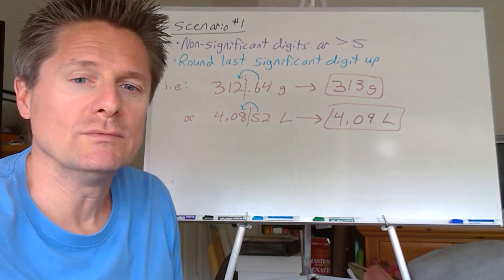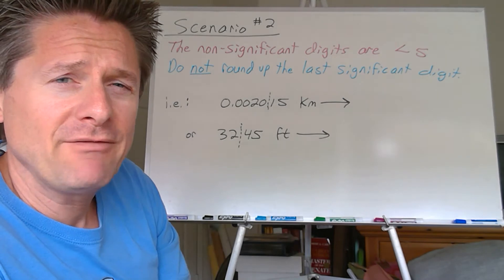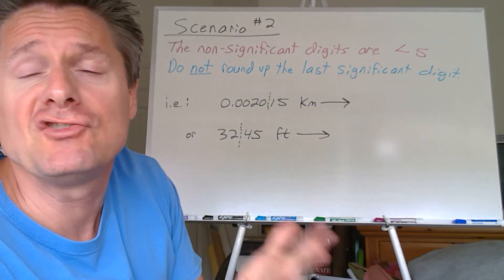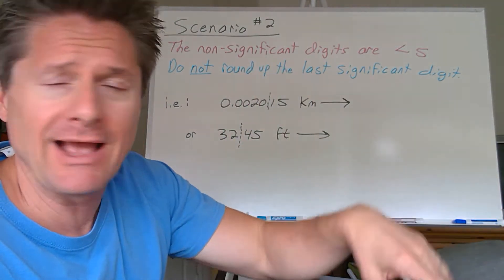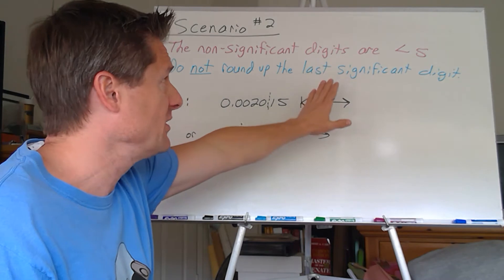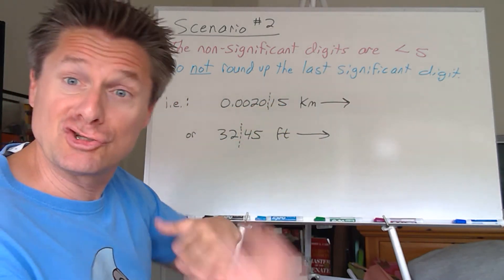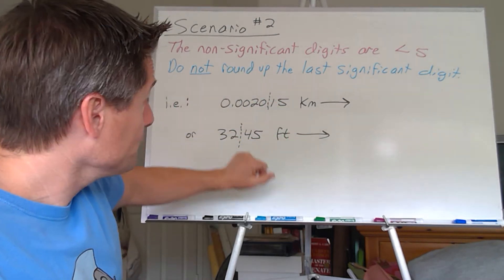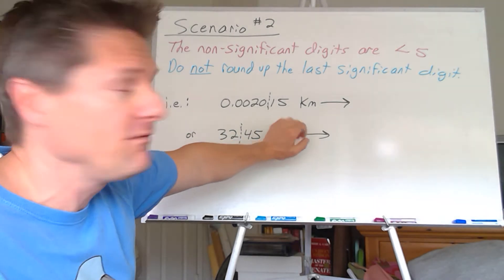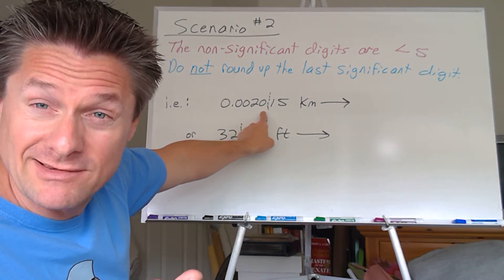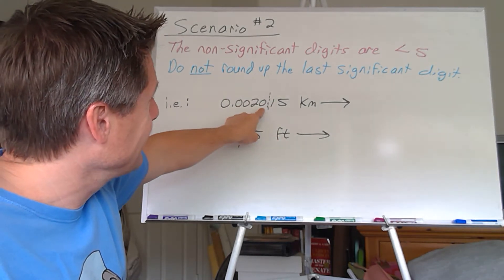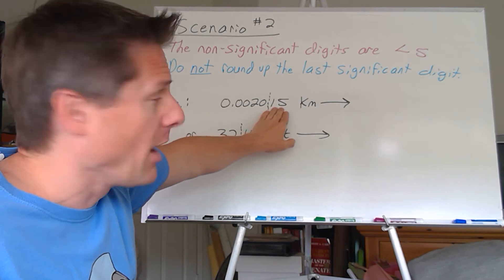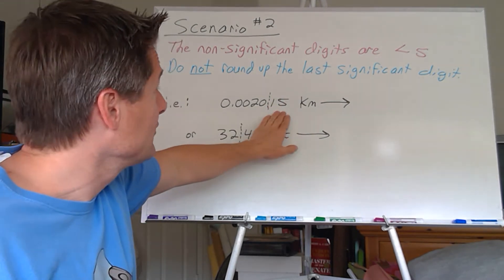Scenario number two: what if the non-significant digits to the right of the vertical dash line are less than five? This is true whether you're using two or three scenarios, any level of chemistry — if they're less than five, it's closer to the smaller number, so you do not round up the last significant digit; you leave it alone. Example: 0.002015, good to two significant figures. The last significant digit is the zero after the 2.